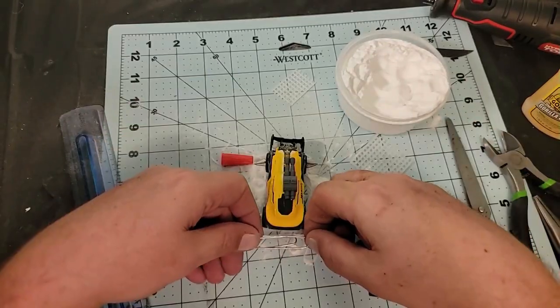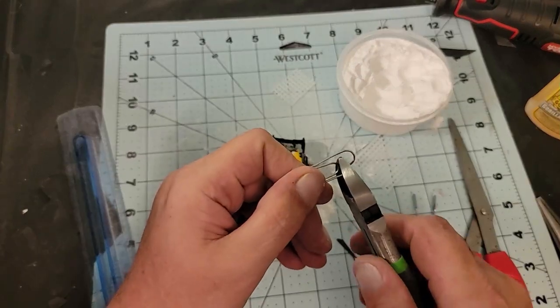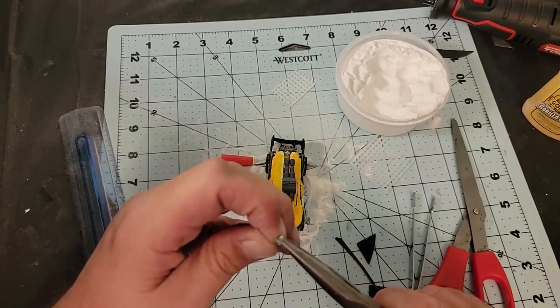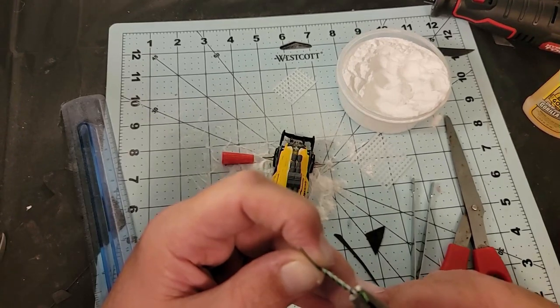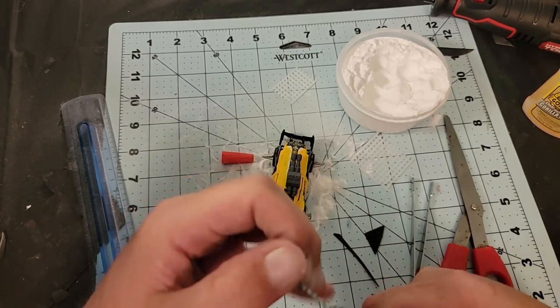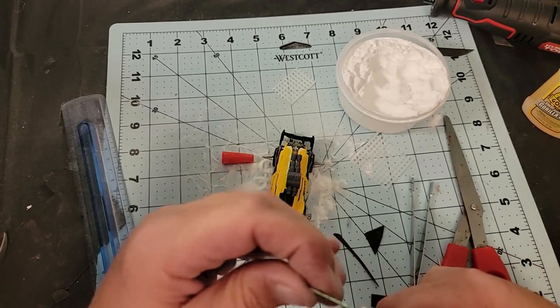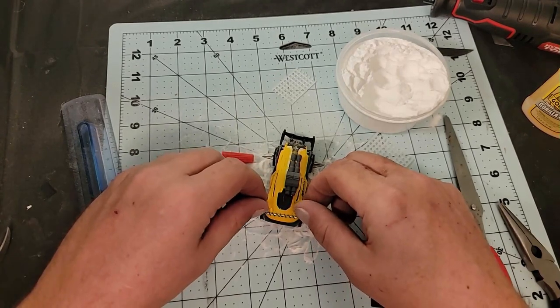For this next part, I wanted a straight piece of wire, so I grabbed a paper clip and cut it to the size I needed and bent the end so that it would stand on the car. Then I took some 18-gauge wire and wrapped it around the paper clip to give the look of barbed wire and glued it to the back of the car.